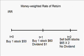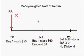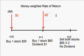For money-weighted rate of return, the first thing we have to do is find the cash flow. From the perspective of your account, at the beginning you bought one stock — it means that your client gave you $50 to buy the stock, so this is a cash inflow of $50. One year later, your client pays you another $60 to buy another stock, so this is another cash inflow of $60. But at the same time, there is a $1 dividend payout which goes to your client, so this is a cash outflow of negative $1.